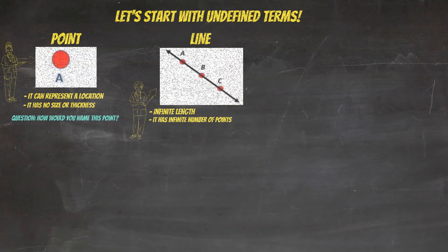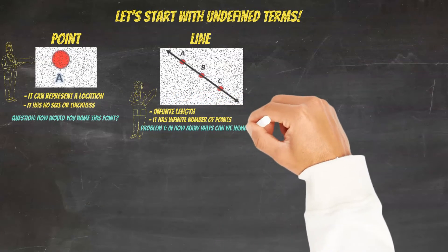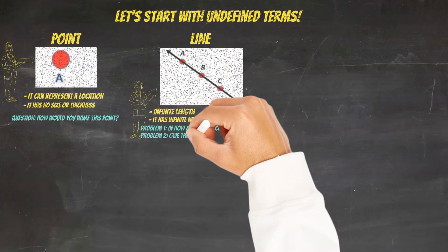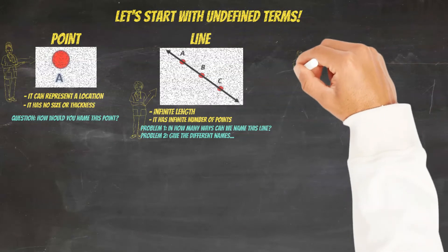I'm going to ask you two questions here. One is, in how many ways can we name this line? And two, give the different names for this line. So let's go on to the next and last undefined term.